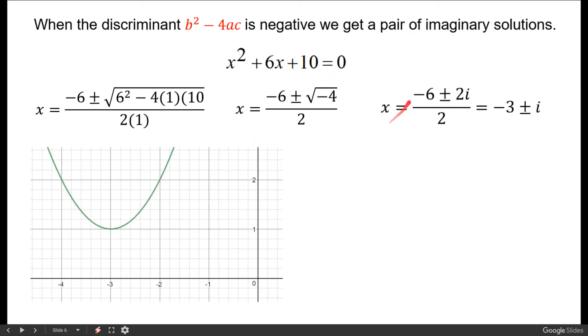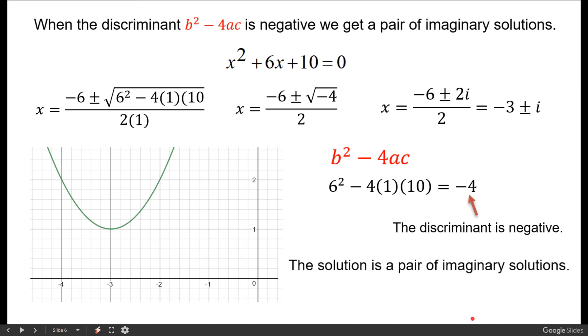So when we simplify we get negative 3 plus or minus i. Notice we don't cross the x-axis at all so we have no real solutions. And again if we just look at the discriminant, the value under the radical b² - 4ac, we're going to get negative 4 which means our discriminant is negative which tells us that the solution is a pair of imaginary numbers.